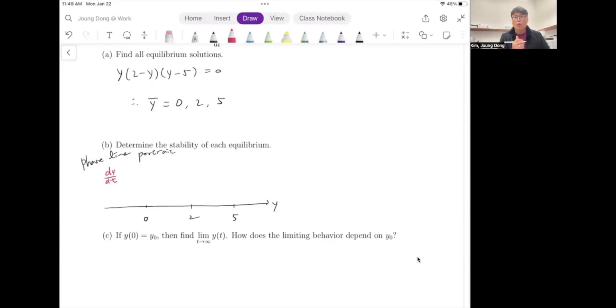dy/dt, as we did before, we're going to just try to plug in any value which is less than 0, for example negative 1, into y times (2 minus y) times (y minus 5). When I plug in negative 1, the first term y is negative 1, which is negative value. And 2 minus minus 1 is 3, which is positive. And minus 1 minus 5 is another negative value. I have an even number of negative values, which means it is positive.